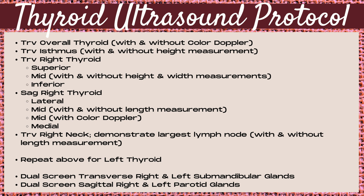Next, move on to the sagittal right thyroid. You want to take sagittal images of the lateral, midsection, and medial portions. For the midsection, take images with and without a length measurement, and also an image with color Doppler.